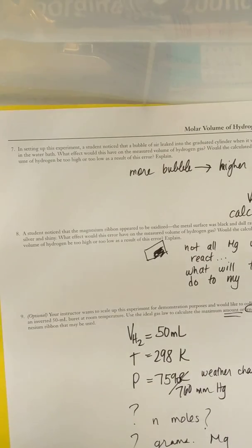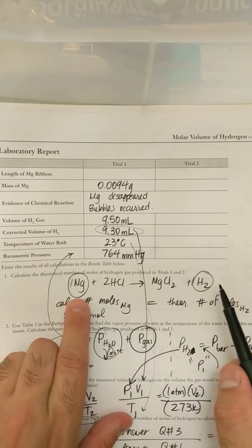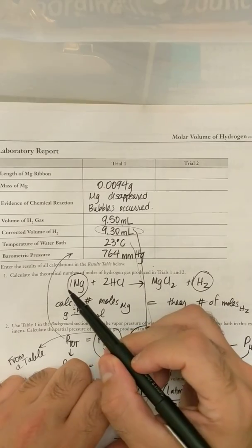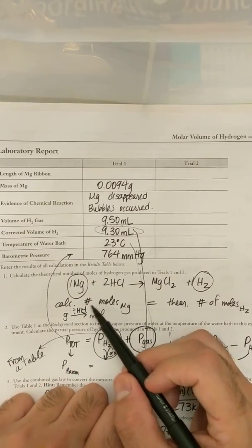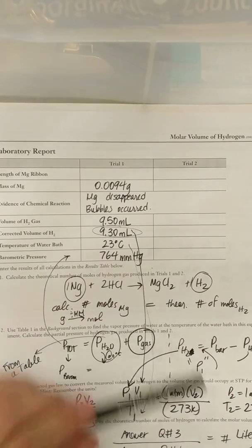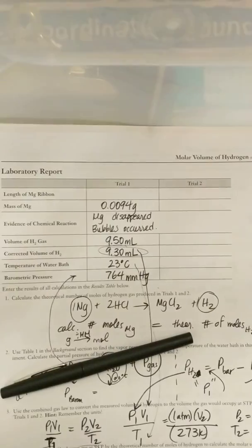And remember, go back to question number one. What is my mole to mole ratio of magnesium to hydrogen? If you solve for your moles of hydrogen, you should be able to solve for my moles of magnesium because it's one to one. And then if you have your moles of magnesium, I could easily convert that to grams using the molar mass. So this is a very quick run through of all of your calculations.